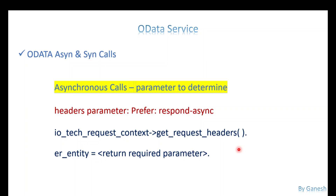For synchronous calls we don't need any particular parameter — everything we've created so far is synchronous. But for asynchronous calls, yes, we do have a parameter. As a POST method, one of the header parameters is 'prefer' and the value is 'respond-async'. This is the standard way of signaling to the backend system that this is an asynchronous call.